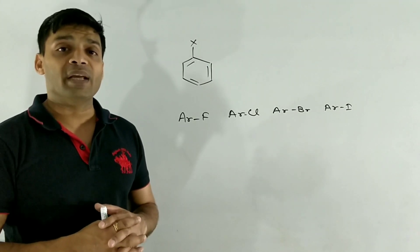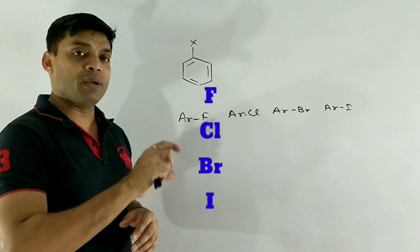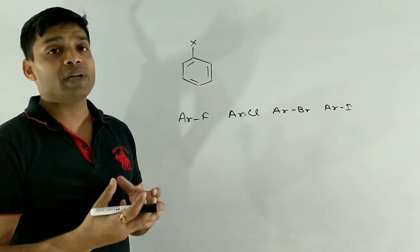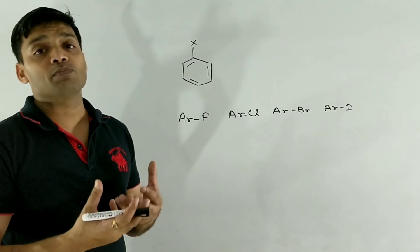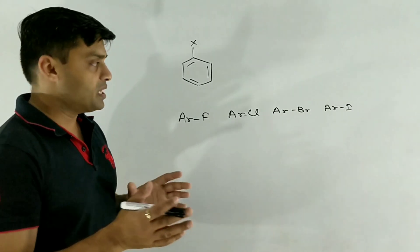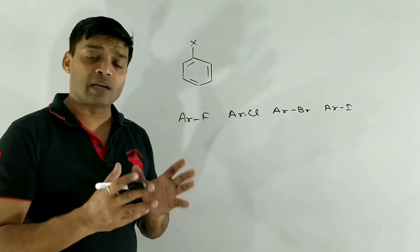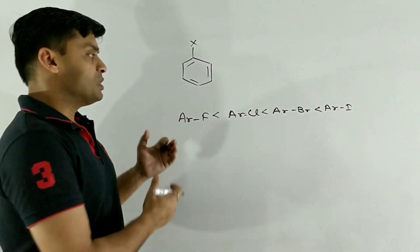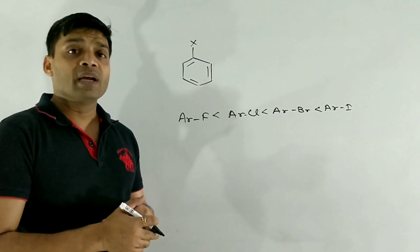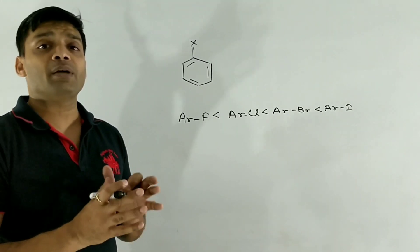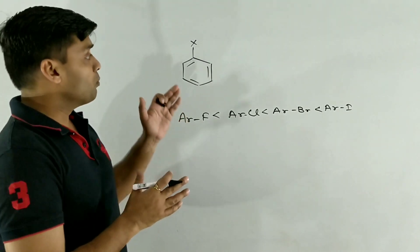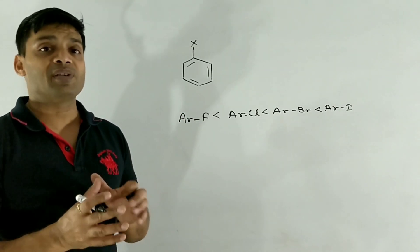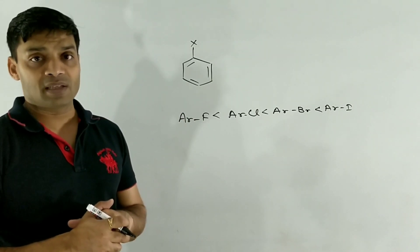As we move down the halogen group from fluorine to chlorine, bromine, and iodine, the halogen atom not only increases in size but its molar mass also increases. So with the increase in molar mass as well as surface area, the boiling point regularly increases. These are the trends for boiling points, and similar variation is exhibited by their melting points. For monohalobenzene, both melting point and boiling point depend upon surface area as well as molecular mass.